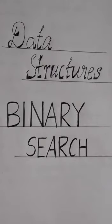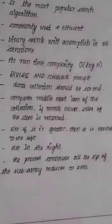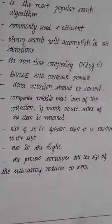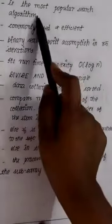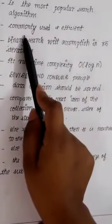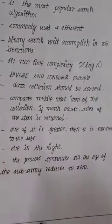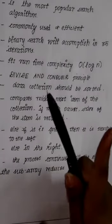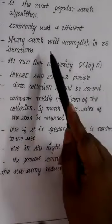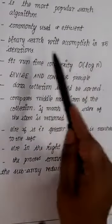Very good afternoon sir. The topic I've chosen is binary search from data structures. Talking about binary search, it is much more faster than linear search. It is the most popular search algorithm and it is commonly used and efficient. In case we write all the names in the world and we have to find one single name, binary search will accomplish it in 35 iterations.